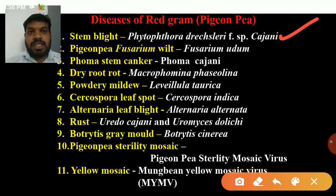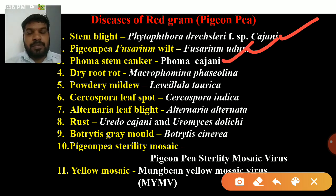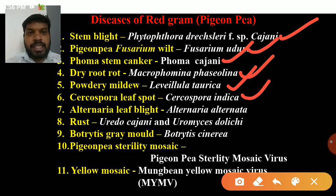Next is Fusarium wilt, caused by Fusarium udum. Then phoma stem canker caused by Phoma cajani, dry root rot caused by Macrophomina phaseolina, powdery mildew caused by Leveillula taurica, Cercospora leaf spot caused by Cercospora indica, and alternaria leaf blight caused by Alternaria alternata.